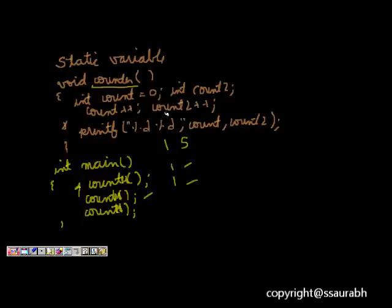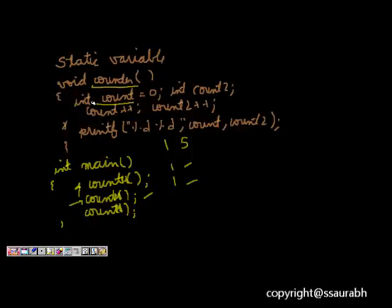Our counter is not increasing because of the automatic nature — the variable gets initialized each time the function is called and its value is forgotten after the function returns. What we want is a counter function that remembers how many times it has been called, using a variable inside the counter function itself. If we define an automatic variable, it is forgotten when the scope of the function is gone.